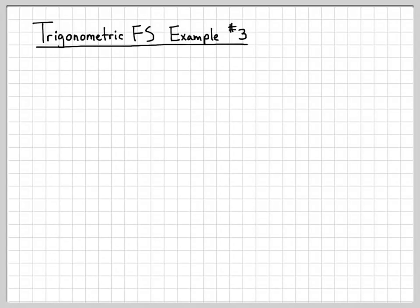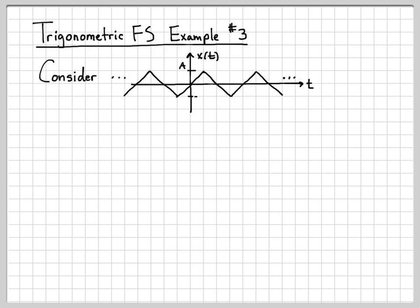All right, this is another example where we will find the trigonometric Fourier series and actually the compact trigonometric Fourier series for a periodic continuous time signal. The continuous time signal we'll work with here is this signal x of t. So it's kind of this sawtooth up down triangle waveform. It has an amplitude of plus minus a.